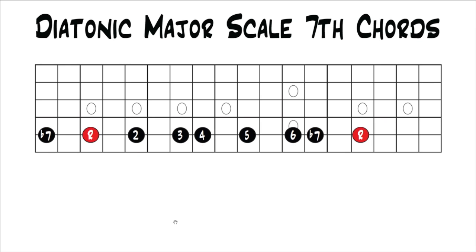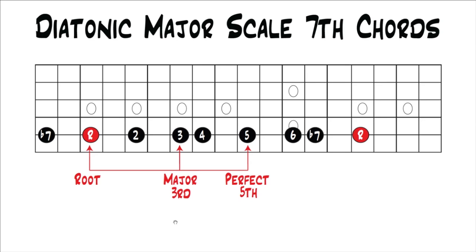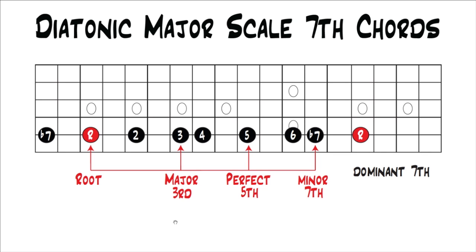Rearranging the intervals again to start on the 5th note of the major scale. Now the 5th note is our new root, giving us root, 2, 3, 4, 5, 6, flat 7 this time. Building a triad off the 5th note gives a major triad. If we stack another 3rd to get to our 7th, we're adding the minor 7th. So now we have root, major 3rd, perfect 5th, minor 7th — and that creates a dominant 7th chord. Building a 7th chord off the 5th note of the major scale gives us a dominant 7th chord.